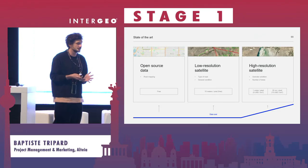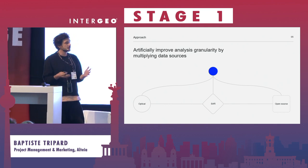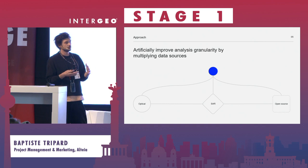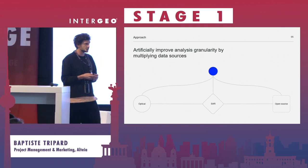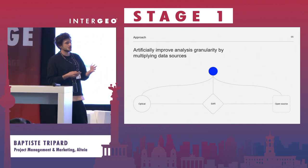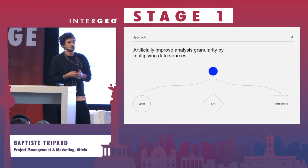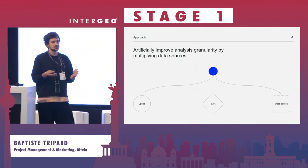This was the framework of our analysis. What we decided to do was to build an artificial intelligence model to artificially improve the granularity of the low-resolution satellite imagery by multiplying the different data sources we had access to — aggregating so much information together that the result is bigger than the sum of all the elements. To do so, we leveraged optical data from Sentinel-2, SAR data from the same program, and about a dozen open source GIS databases like OpenStreetMap, but also initiatives like Mapillary, which provides access to ground-based images in developing countries.